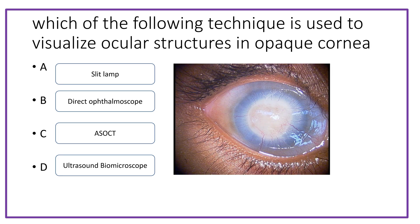Next question: which technique is used to visualize the ocular structures in an opaque cornea? Options are slit lamp, direct ophthalmoscope, AS-OCT, and UBM. The answer is UBM, because it has better penetration in cases of opaque corneas.